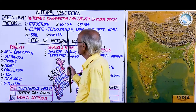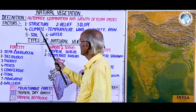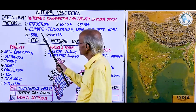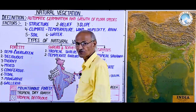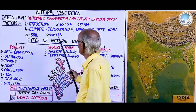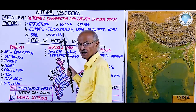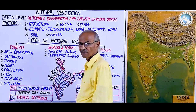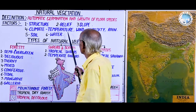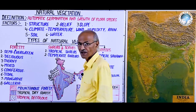Among all these factors, if asked which is most important, the answer is climate. And among climatic factors, temperature or thermal conditions are most responsible for the distribution of vegetation in the world. In India, after temperature, it is the amount of rainfall that is most significant.